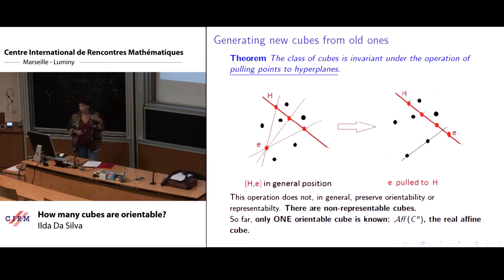And what we get is another cube. This operation does not preserve neither orientability in general nor representability. From our original family of cubes, affine cubes, we can get easily cubes which are not representable over any field.